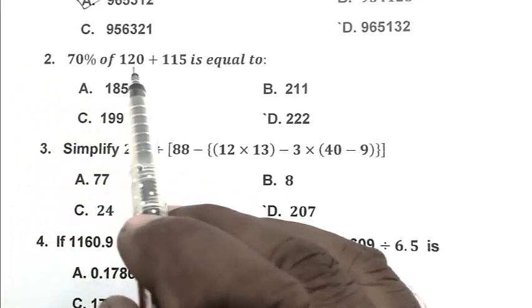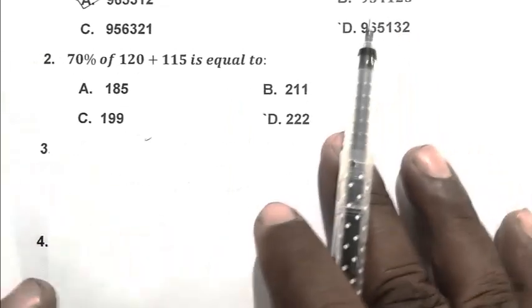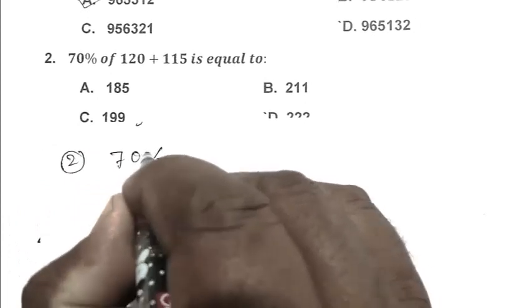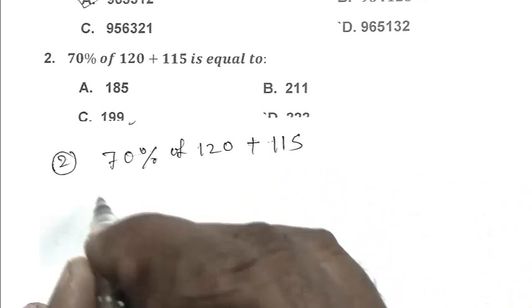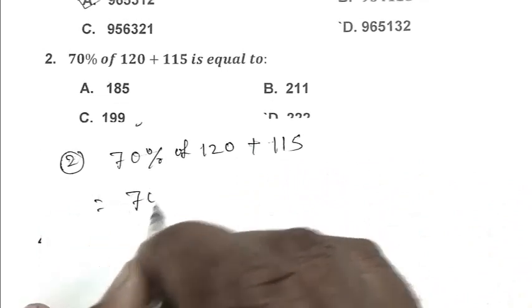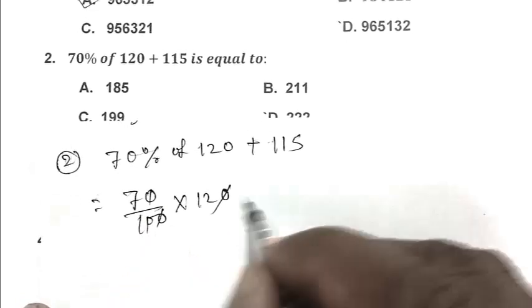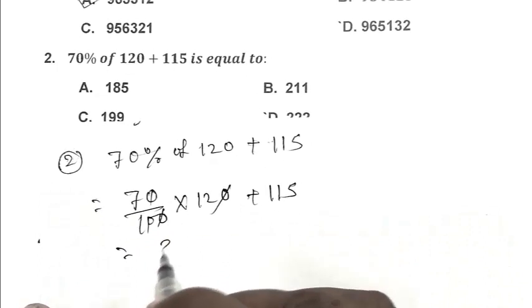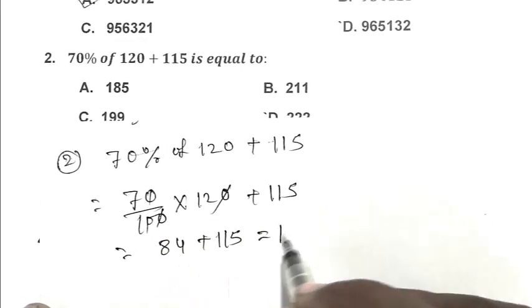Question number 2: 70% of 120 plus 115 is equal to. First we write the expression that is 70% of 120 plus 115. It's become 70 by 100 multiplied by 120 plus 115. It's become 84 plus 115, so 199. C is the right answer.